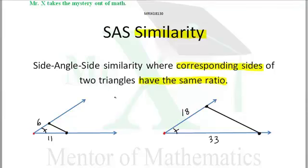So indeed, 6 over 11 is the same ratio as 18 over 33. The triangles are similar.